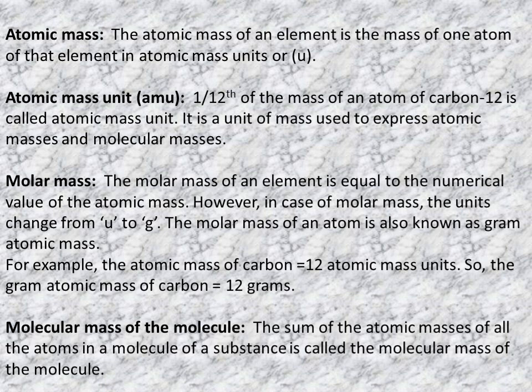Next: molar mass. The molar mass of an element equals the numerical value of the atomic mass, but the units change from u to grams. The molar mass of an atom is also known as gram atomic mass. For example, the gram atomic mass of carbon is 12 grams, whereas the atomic mass of carbon is 12u.